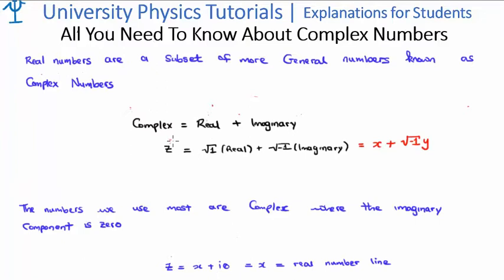We use the placeholder z for an arbitrary complex number. It has two components — a real and an imaginary component. It is given as the square root of plus 1 times the magnitude of the real component, and the square root of negative 1 multiplied by the magnitude of the imaginary component. We give the placeholder x for the real component and y for the imaginary component. Since the square root of plus 1 is 1, we usually don't explicitly write this down, so z is x plus the square root of minus 1 times y.